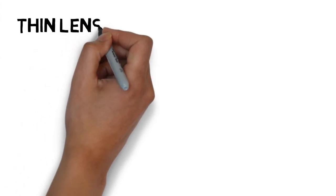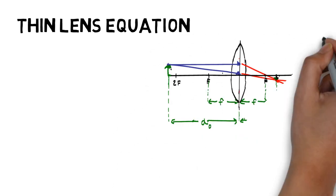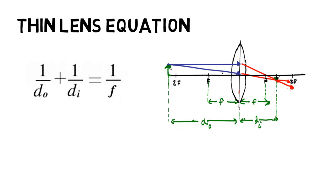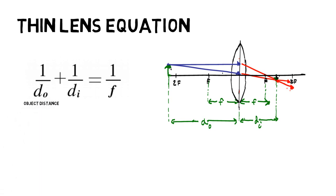Now let's learn about the helpful Thin Lens Equation. The Thin Lens Equation is a useful way to demonstrate a relationship between an object's distance from the lens, focal length, and image distance from the lens. Here is the diagram that displays all three of these variables, and here is the actual Thin Lens Equation. The inverse of the object distance plus the inverse of the image distance is equal to the inverse of the focal length.